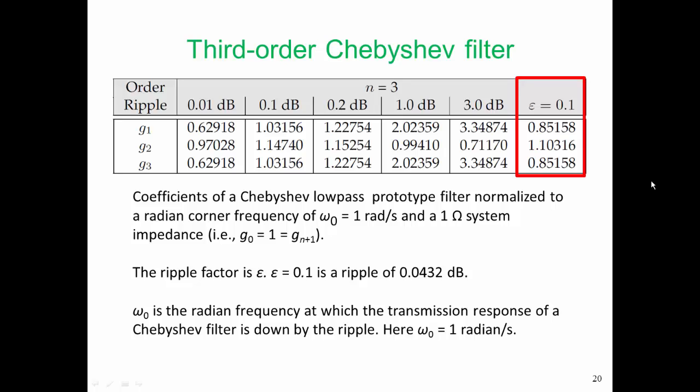Now just to reinforce this, omega 0 is the radian frequency at which the transmission response of the filter is down by the ripple. Well, here omega 0 is equal to one radian per second. Sometimes you'll come across filter tables where the normalization could be one hertz. If that was the case, then a lot of the development that's going to follow in this case study would have to change just a little bit. So in this case study, we're going to take the corner frequency of the low-pass prototype filter as one radian per second.